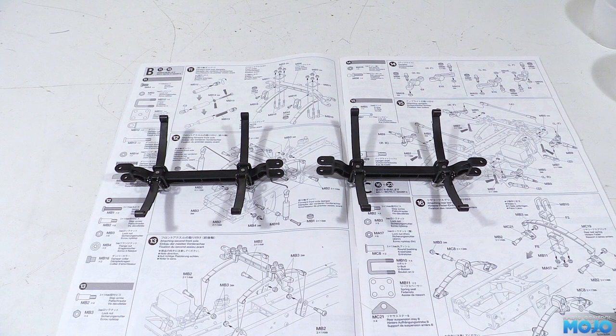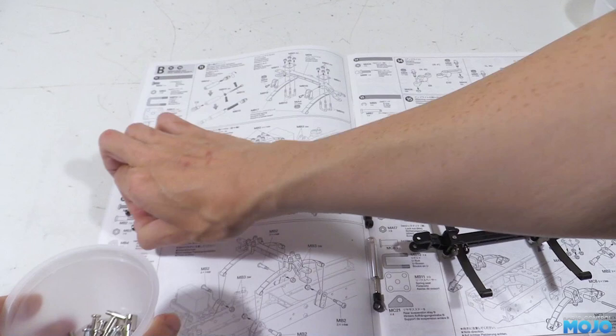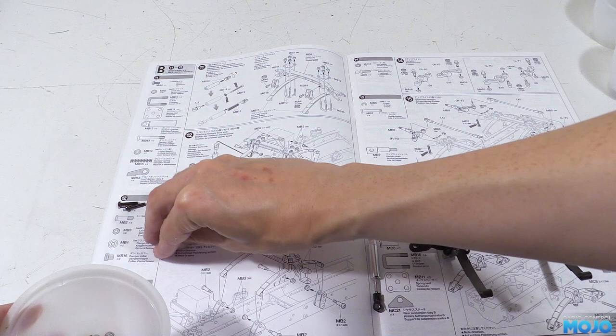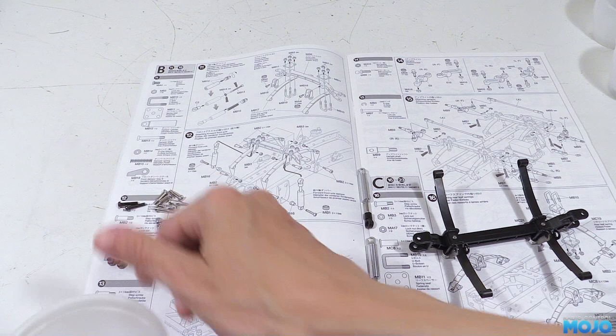Step 12. Fitting the front axle. We're going to need the dampers and an axle, two m3x15s, six 3x14 step screws, six m3 nylocks, two m3 flange nuts, two damper collars and the chassis.